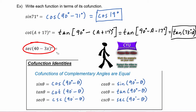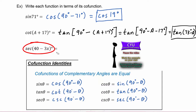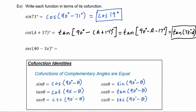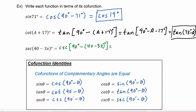It's CYU time, so pause the video, work the example on your own, then restart the video to check your answer. We have secant of the quantity (40 minus 3x) degrees. The co-function of secant is cosecant, and we take 90 degrees minus the angle. That gives cosecant of 90 degrees minus 40 degrees plus 3x degrees, which simplifies to cosecant of (50 + 3x) degrees.